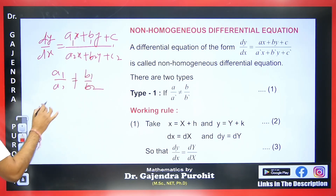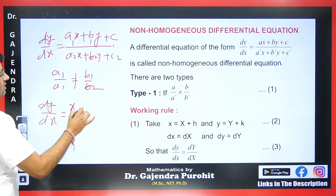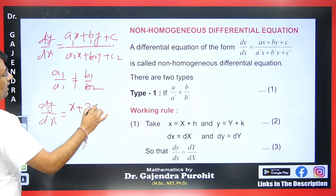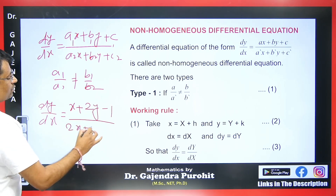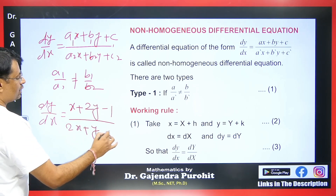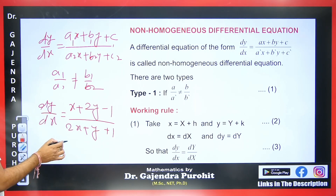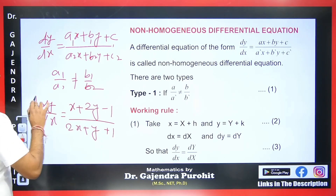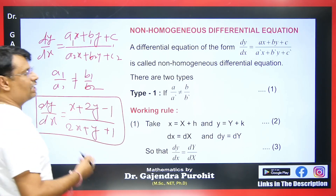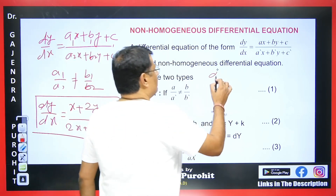For example, if we take dy/dx = (x + 2y - 1) / (2x + y + 1), the coefficient of x is 1/2 and the coefficient of y is 2/1. Since they are not equal, we can reduce this equation to a homogeneous equation. There is one more type to consider.